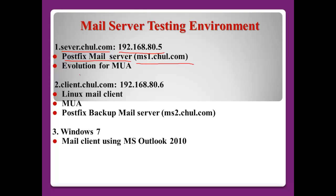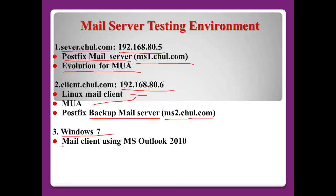For MUA configuration, I will configure Evolution. The client machine is clientchall.com with IP address ending in .8.6 — this will be the Linux mail client using Thunderbird. There is also a Postfix backup mail server named mailserver2.chall.com, and a Windows machine that will be a mail client using Outlook 2010.